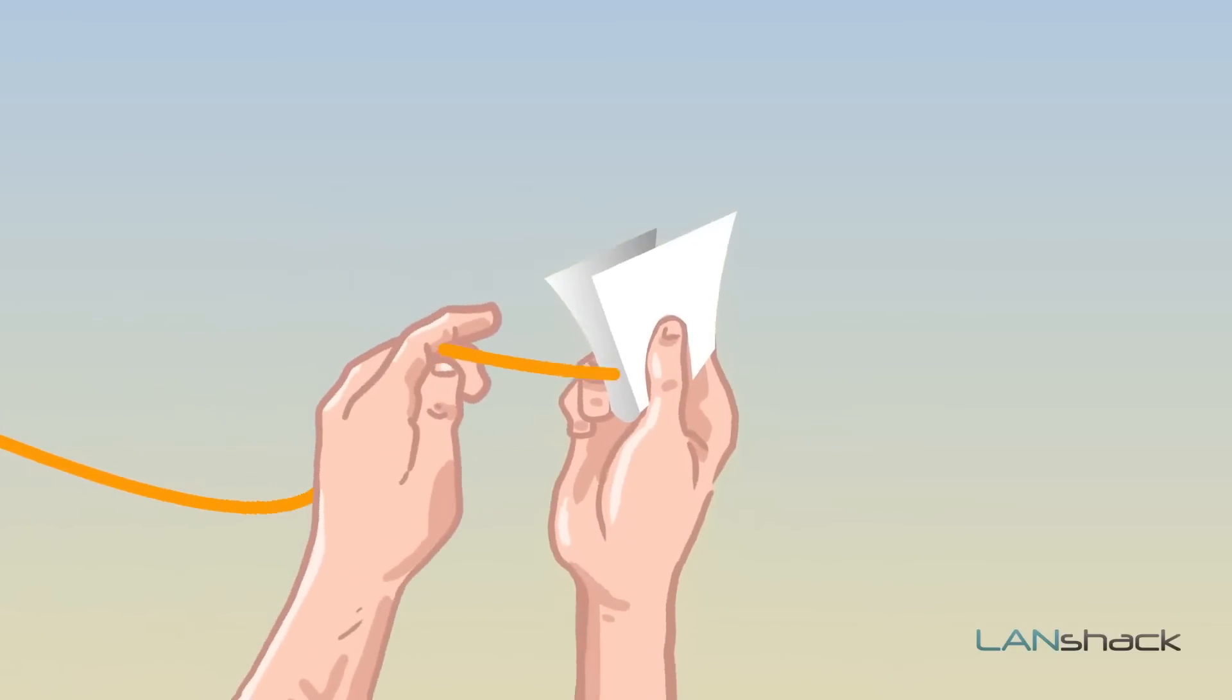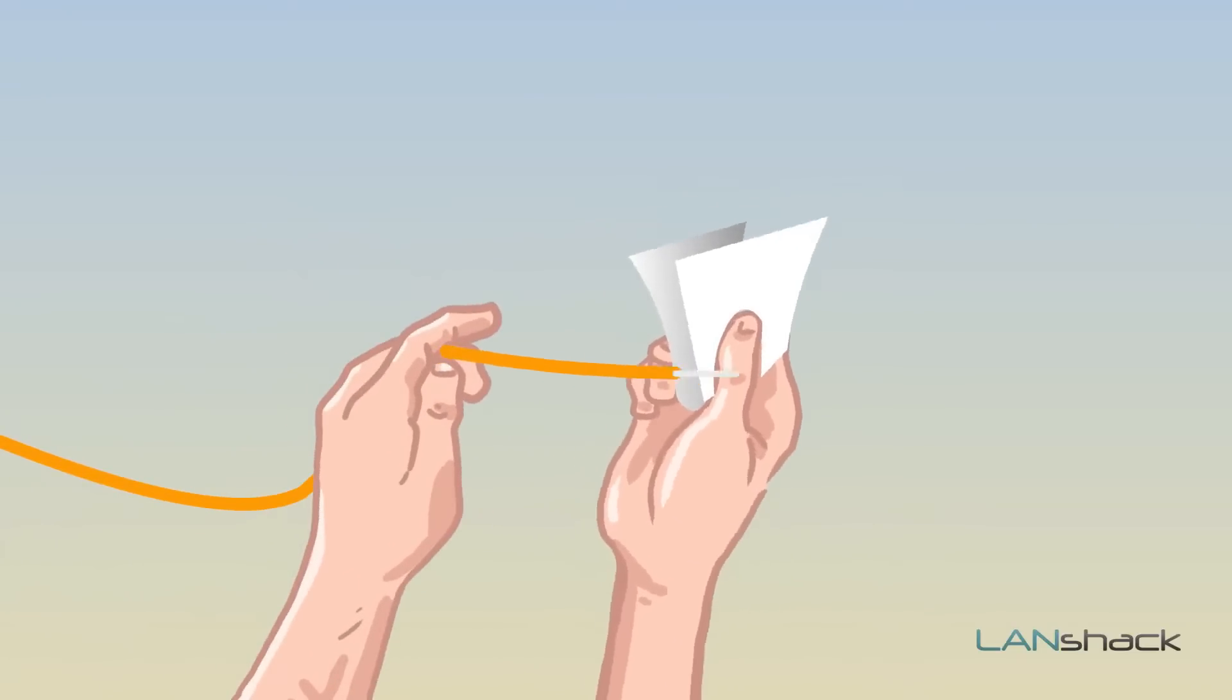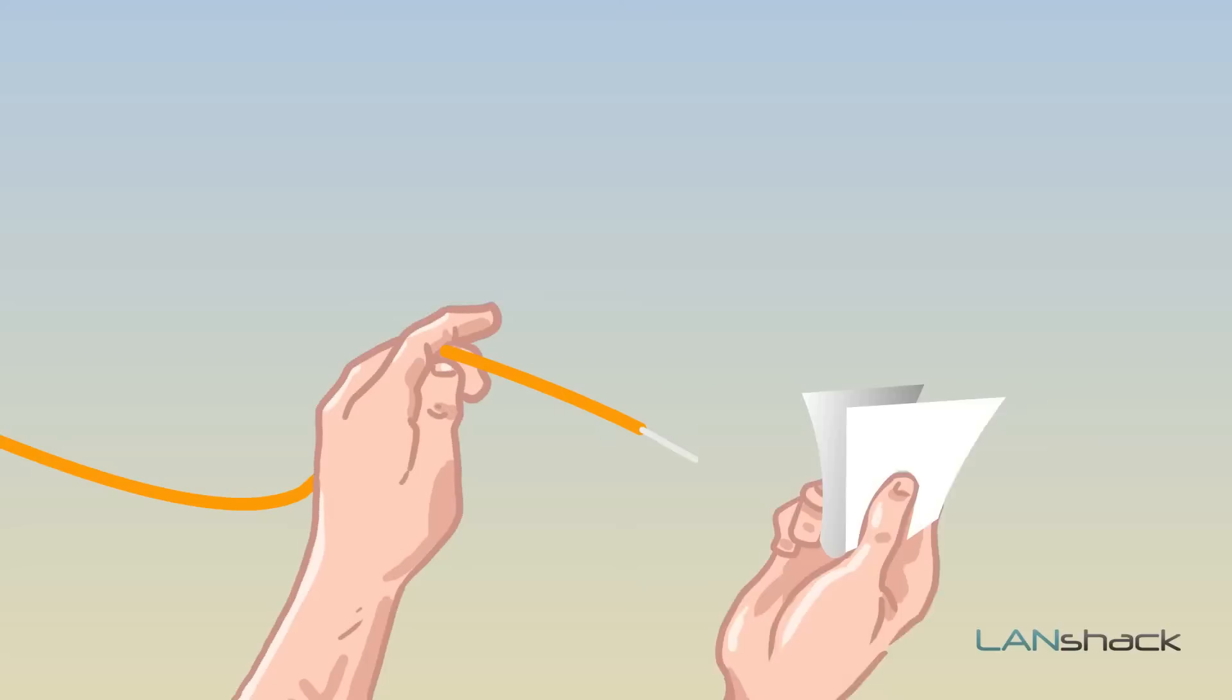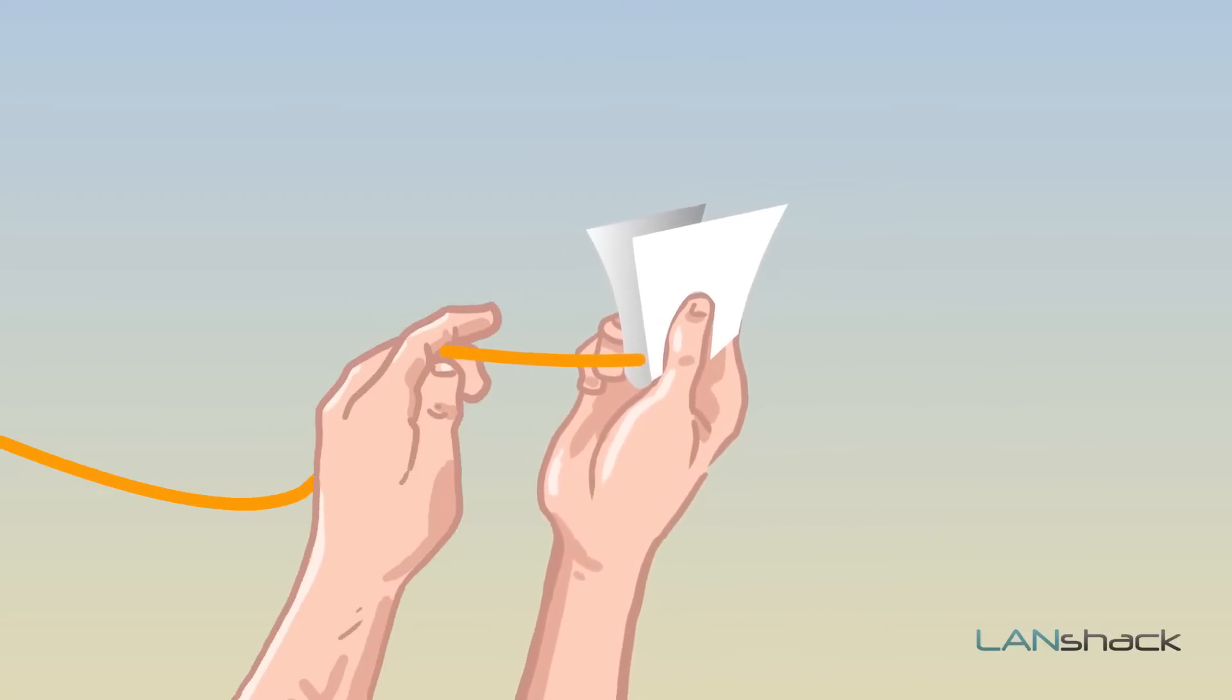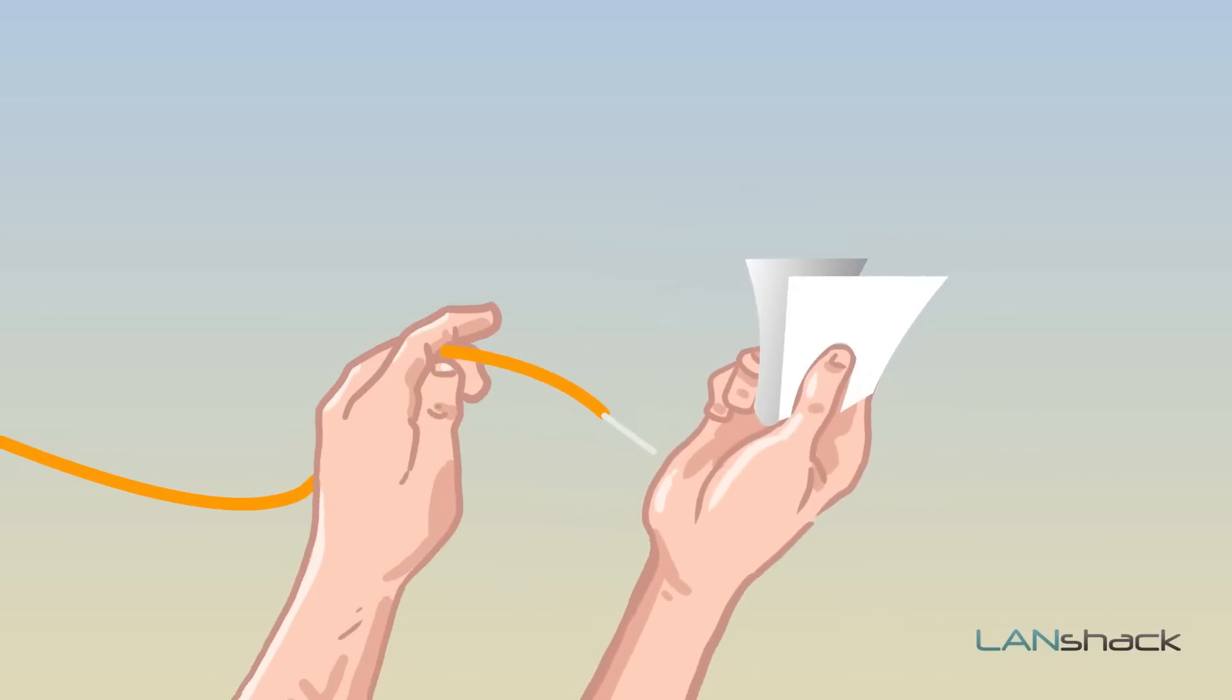Then, dab a lint-free wipe in fiber optic cleaning solution to wipe off the coating. Slide the wipe towards the end of the fiber once or twice until it squeaks. The squeak indicates the fiber is clean.